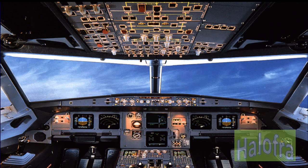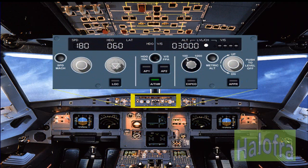The flight control unit, FCU, is located in the middle of the glare shield. The FCU is one of the interface units between the pilots and the autoflight system.